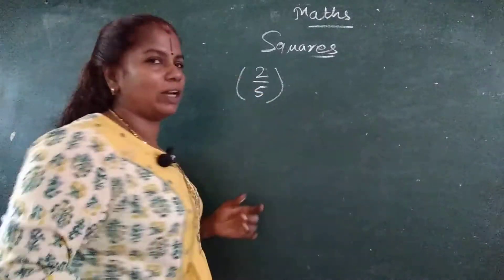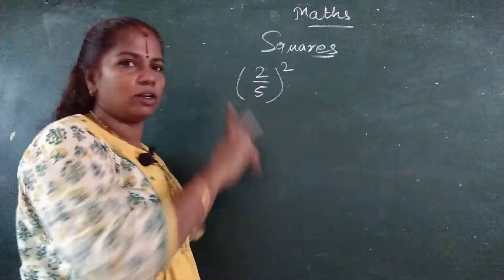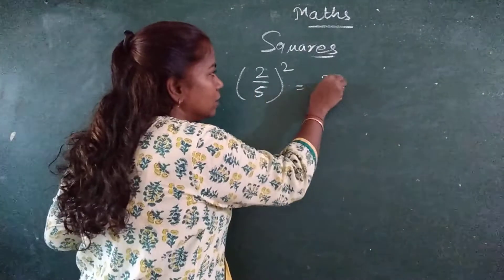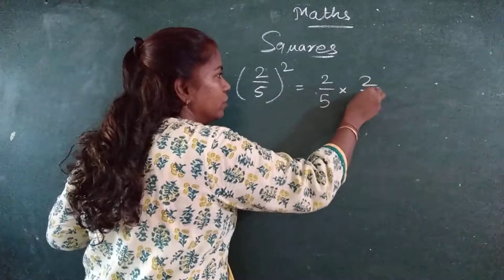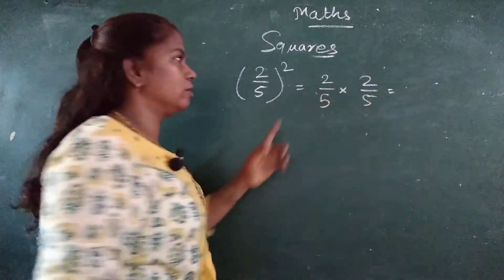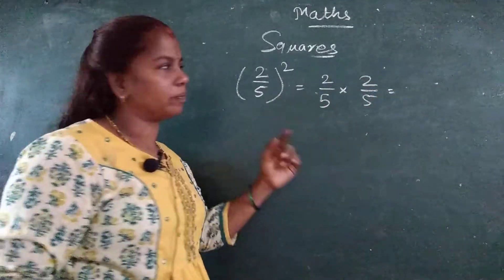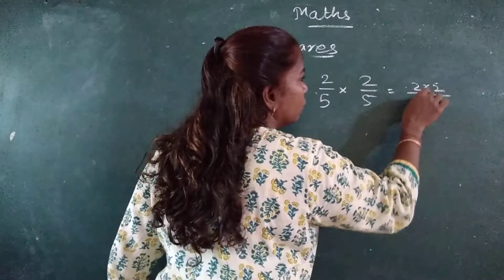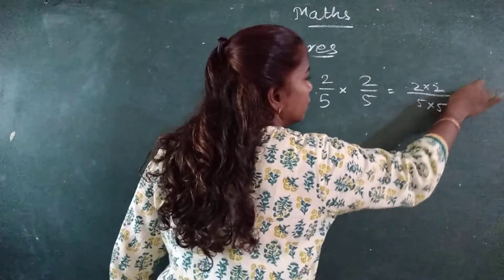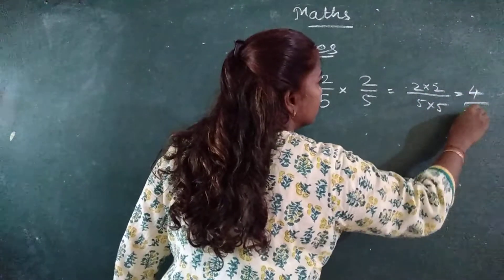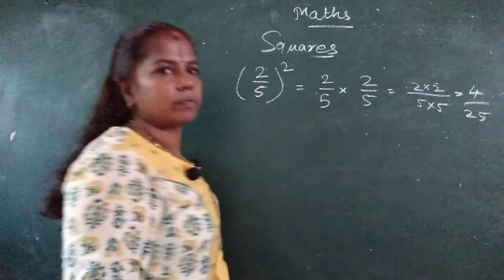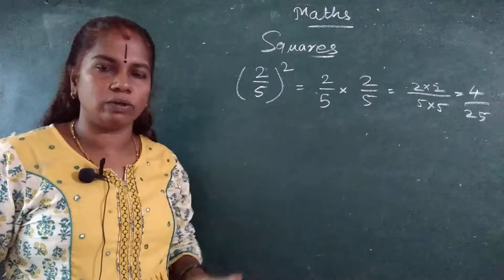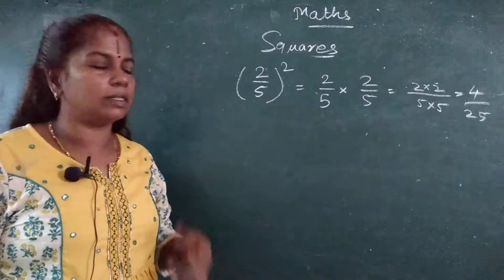2 upon 5, the whole square. 2 upon 5, the whole square. How will you write? 2 upon 5 into 2 upon 5. Got it? Put dash. 2 into 2, 5 into 5. 2 2's are how much? 4. 5 5's are how much? 25. Got it? 2 2's are 4, 5 5's are 25.